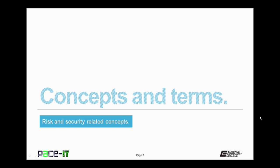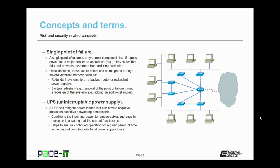Now let's talk about some concepts and terms that you should know. First up is Single Point of Failure. A single point of failure is a system or component that, if it goes down, has a major impact on operations. An example is if a key router goes down and it prevents customers from ordering products — that's a single point of failure. Once identified, these failure points can be mitigated through several methods, such as redundant systems like adding a backup router, or a redundant power supply. Single points of failure can also be mitigated through system redesign, removing that point of failure entirely.